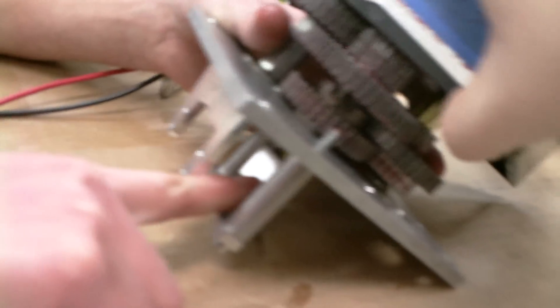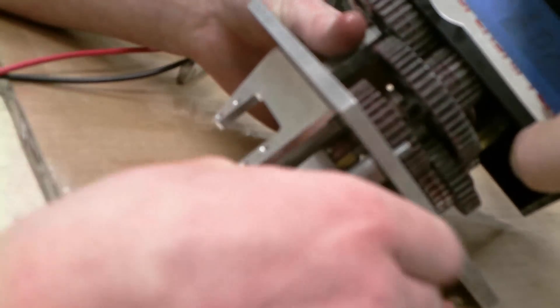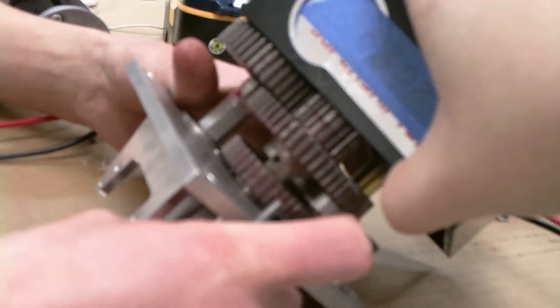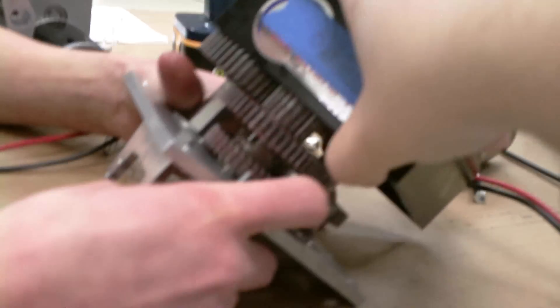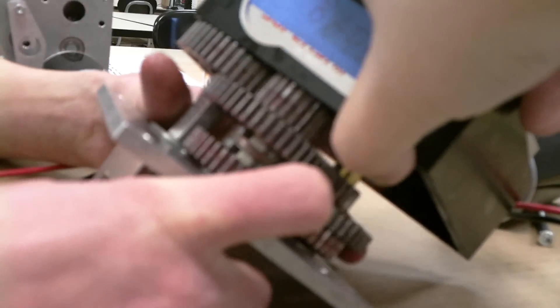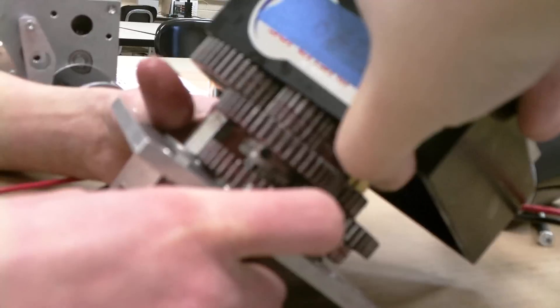And then when you push this shifting rod right here up, it engages another set of teeth on this gear right here, which engages the high-torque output of the motor. So, there's high-speed, and then there's high-torque.